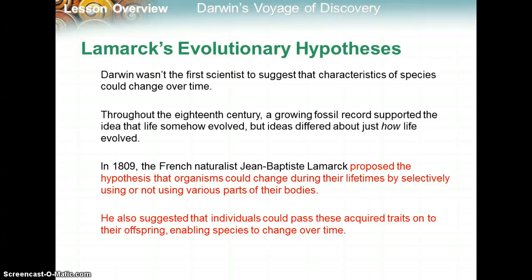This gets into Lamarck's evolutionary hypothesis. Darwin wasn't the first scientist to suggest that characteristics of species could change over time. Throughout the 18th century, a growing fossil record supported the idea that life somehow evolved, but ideas differed on how. In 1809, French naturalist Jean-Baptiste Lamarck proposed the hypothesis that organisms could change during their lifetimes by selectively using or not using various parts of their bodies. He also suggested that individuals could pass these acquired traits onto their offspring, enabling species to change over time.